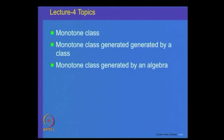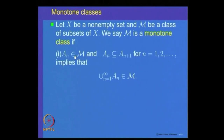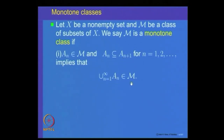Let us start with describing what is a monotone class. A monotone class is a collection M of subsets of a set X with the following two properties. Whenever there is a sequence of sets A_n belonging to M and the sequence is increasing — that means A_n is a subset of A_{n+1} for every n — then we demand that the union of these sets A_n also belongs to M.